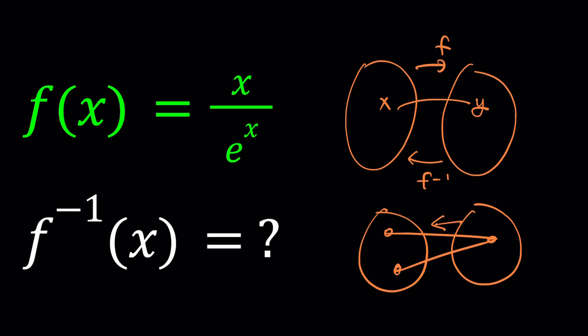So how do you find the inverse of a function like this? You probably know how to find the inverse of x, which is the identity, and e^x is another one which comes up a lot and its inverse is the ln function, the natural logarithm.